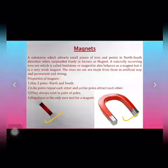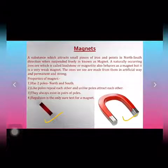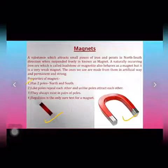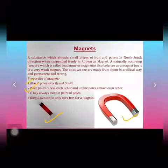Now let us talk about the properties of magnets. First, a magnet has two poles: the north pole and the south pole. Whenever we freely suspend the magnet, it always rests in the north-south direction. The second property is that like poles repel each other and unlike poles attract each other.